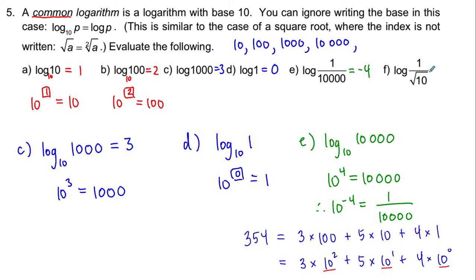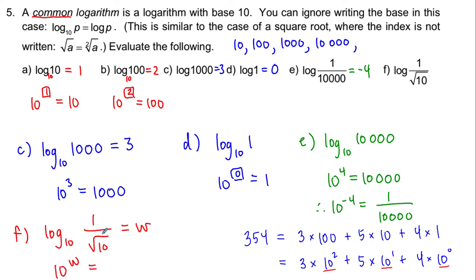For log of 1 over the square root of 10, feel free to let that logarithm equal w, then transform from log form into exponential form: 10 to the w equals 1 over the square root of 10. The square root means a fraction exponent of 1/2, and the '1 over' means changing the sign of the exponent. So 10 to the w equals 10 to the negative 1/2, and by the one-to-one property w equals negative 1/2.